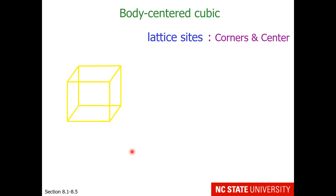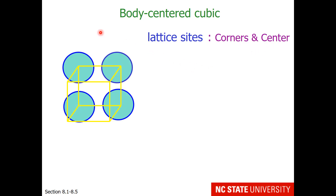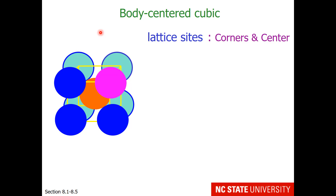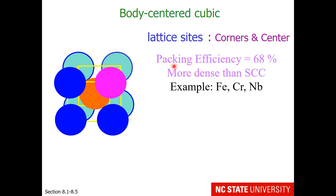Our next unit cell is called body-centered cubic. This has lattice sites in the corners and the center — there is the back layer, the one in the center, and the front layer. The packing efficiency of this type of unit cell is 68%, so this is more dense than the simple cubic cell. Atoms like iron, chromium, and niobium pack this way.